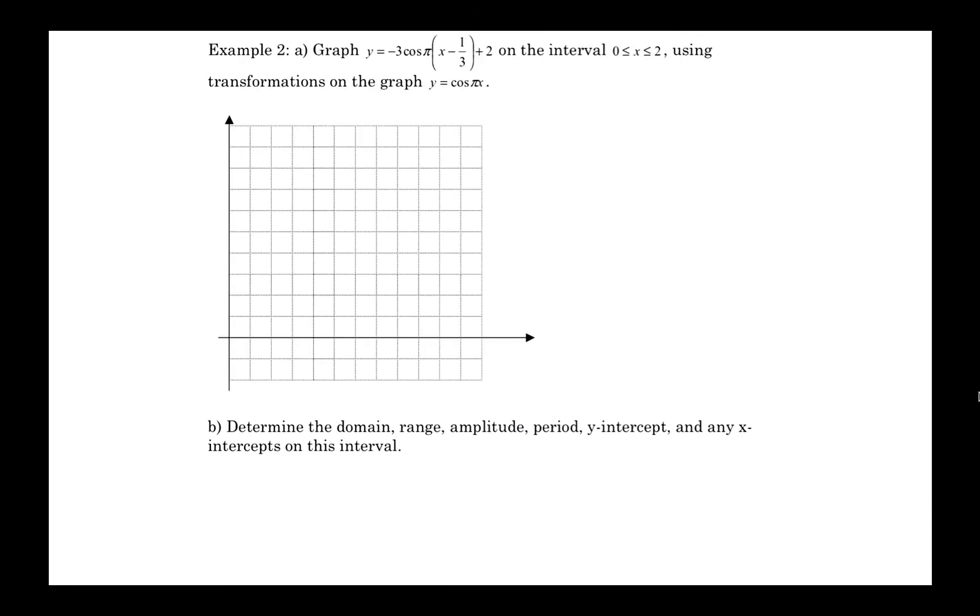Let's take a look at example number 2. It says to graph y equals negative 3 cosine pi of x minus 1 third plus 2 on the interval from 0 up to 2, using transformations on the graph of y equals cos pi x. So I, first of all, label the x and y axes, and I make a scale that's appropriate. And now let's talk about these different pieces. So first of all, the fact that there's a plus 2 on the end means that that is the vertical displacement, so it's up 2 units from there.